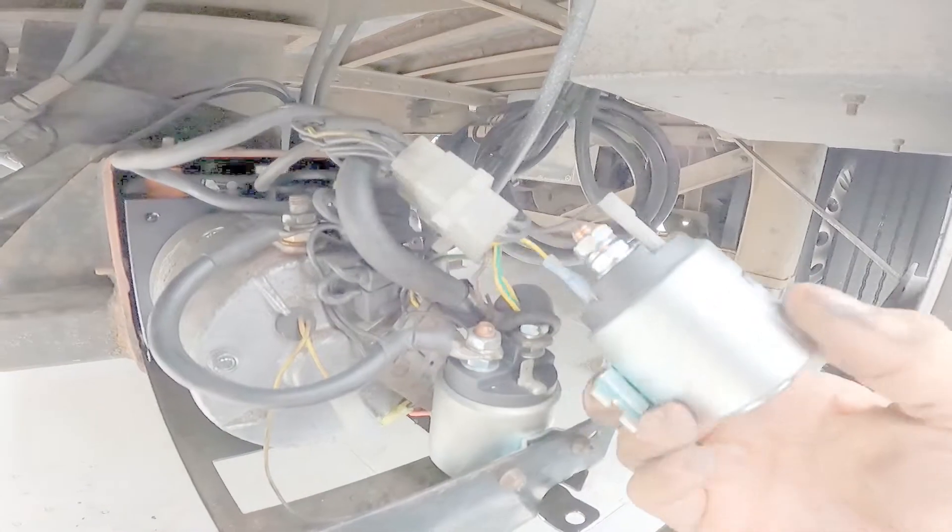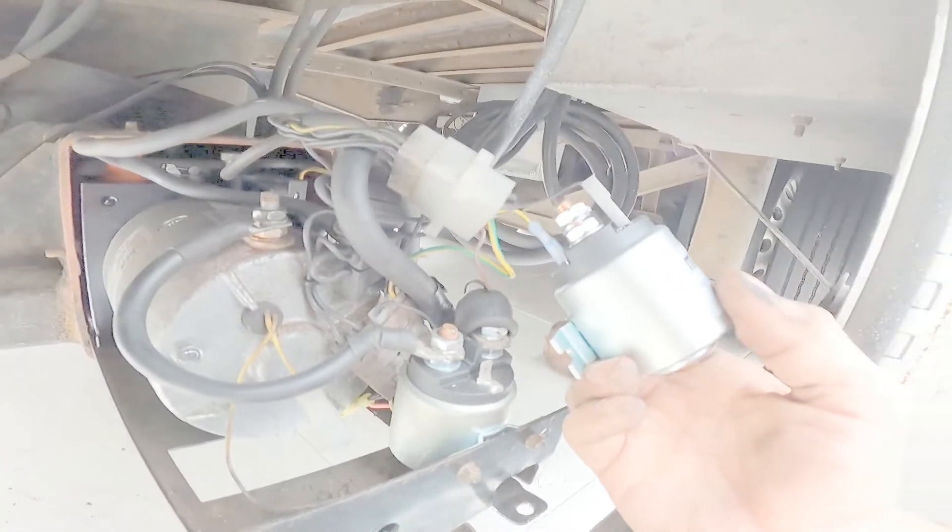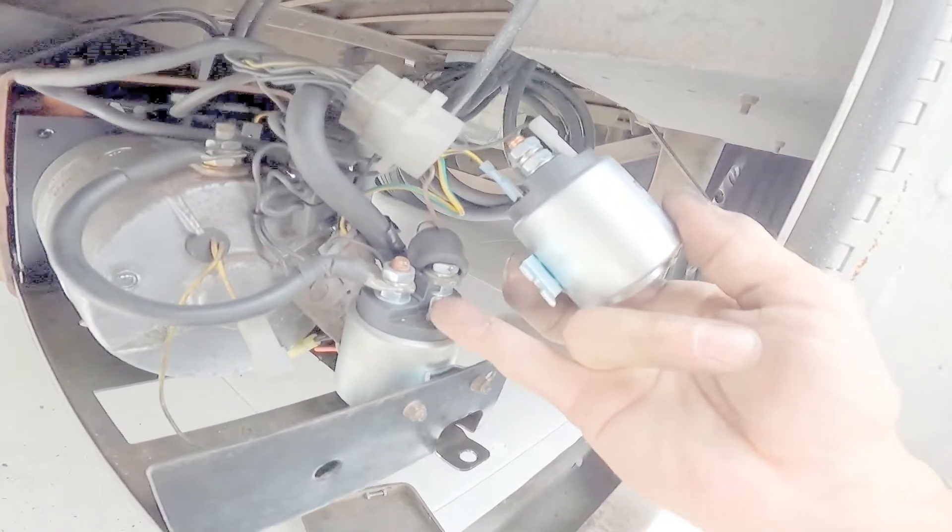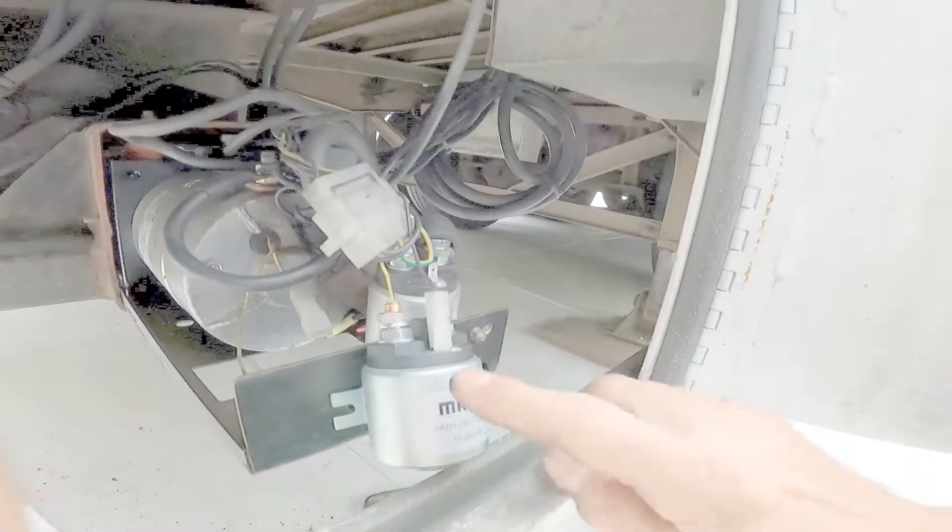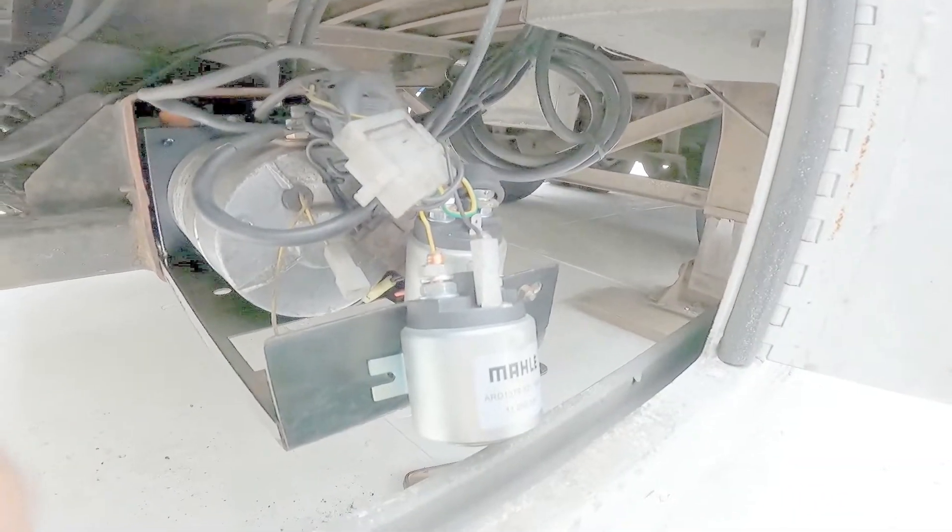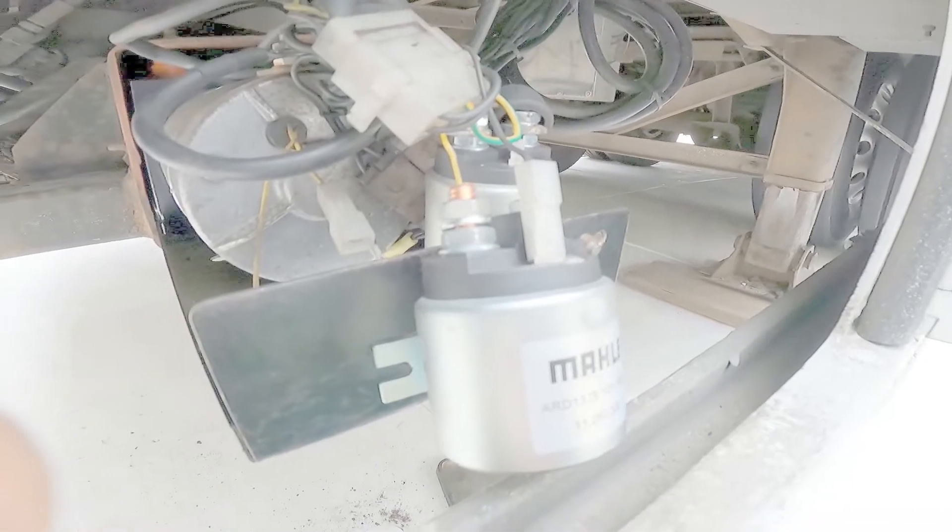This is how you test the new solenoid to see if the control voltage is there. What I've done is I've removed the control leads from this solenoid and I put them on the brand new one. I'm going to listen for this one to click when I energize this. Ready? This is the sound you hear it. That's the sound it makes when it's energizing.